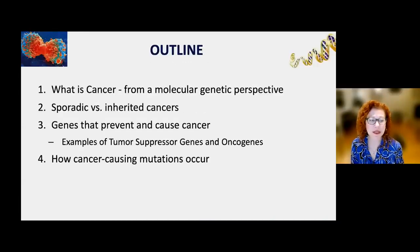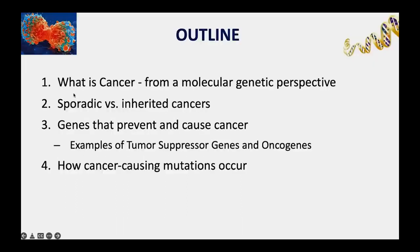Specifically, what I'm going to talk about: we'll start by discussing what cancer is from a molecular genetic perspective, differentiate between sporadic or common forms of cancer versus inherited cancers, talk about different types of genes that prevent and cause cancer—called tumor suppressor genes and oncogenes—go through a few examples, and then discuss how mutations occur in these genes that lead to cancer.